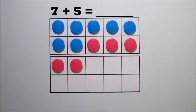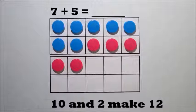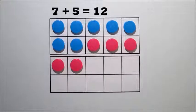Now, we have 10 and 2. 10 and 2 make 12. So, 7 plus 5 equals 12.